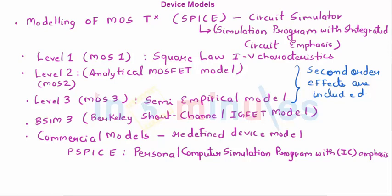Now level 1 models are nothing but the models which take into consideration the square law IV characteristics. It also takes into consideration your channel length modulation and body effect but it does not take into consideration any of the second-order effects which we have already studied. Level 2 is an analytical MOSFET model also called as MOS 2 model. This will take into consideration your second-order effects so would level 3 which is a semi-empirical model. Here we are not getting into the details of each of these models. The idea here is to understand the basics of level 1 and level 2.